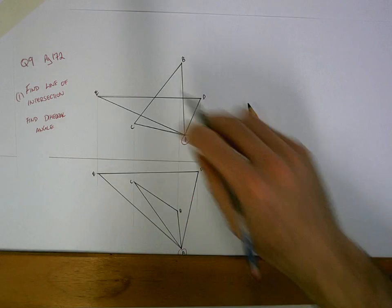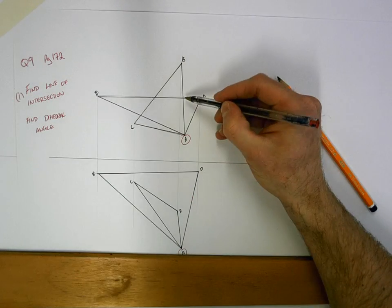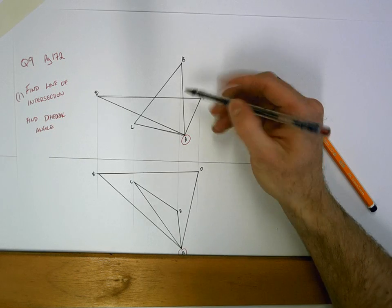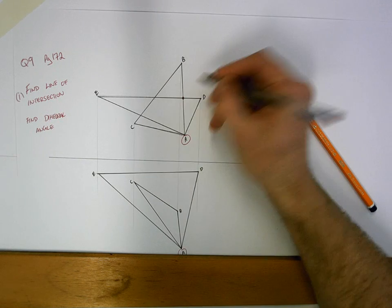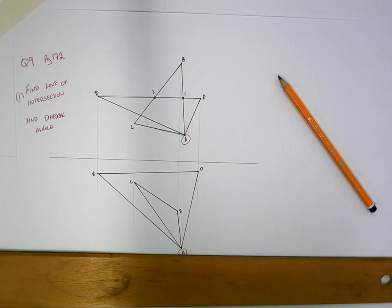Now point D and point E are already labelled because they are points on a plane. What we're going to do is label where it cuts through ABC. So we'll mark that point, call it point 1, and we'll mark the exit and call that point 2.